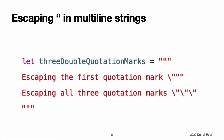Because multi-line string literals use three double quotation marks instead of just one, you can include a double quotation mark inside of a multi-line string literal without escaping it. To include a triple quotation mark in a multi-line string, escape at least one of the quotation marks.